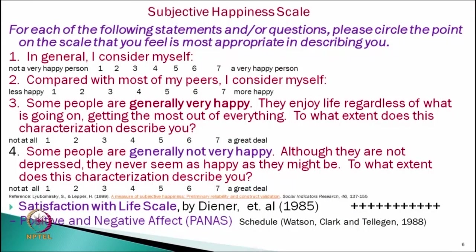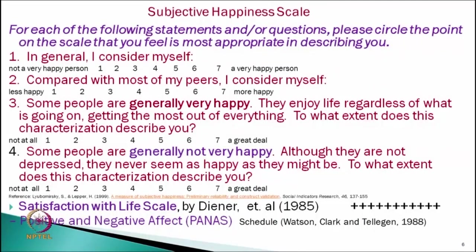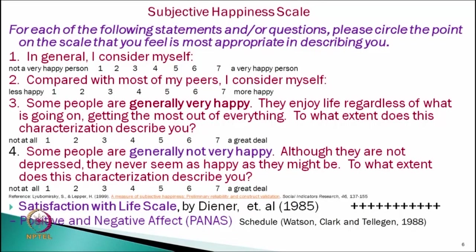If the overall view of life is our theoretical explanation of happiness, then questions in a psychological test should reflect that — this is called construct validity. For example, in the Subjective Happiness Scale, the first question is: in general, I consider myself not a very happy person (1) to a very happy person (7). The second question: compared with most of my peers, I consider myself less happy (1) to more happy (7).